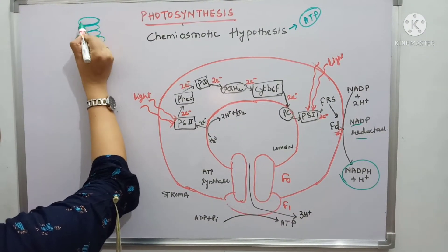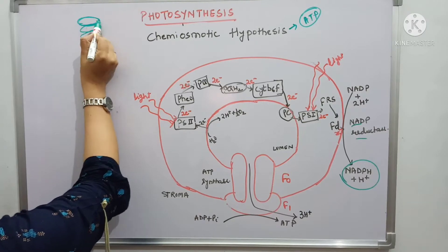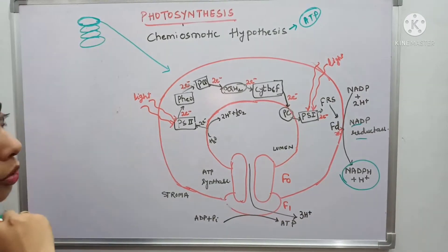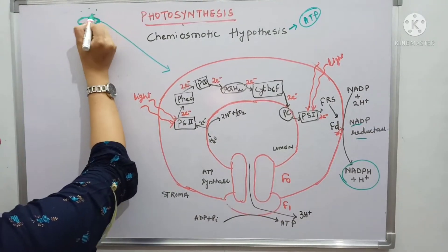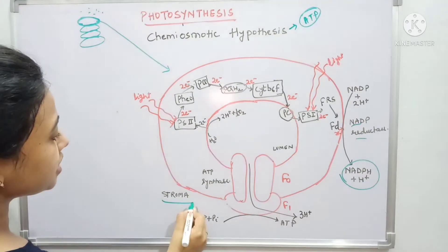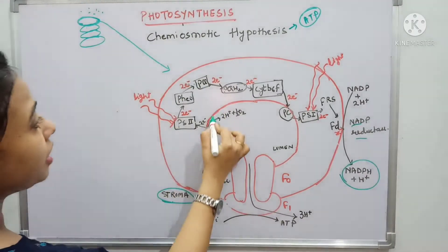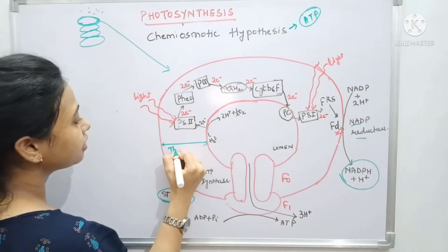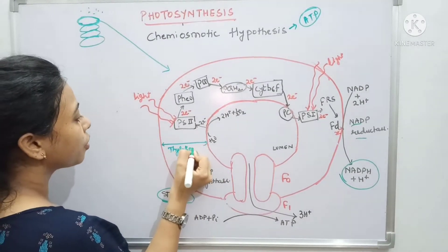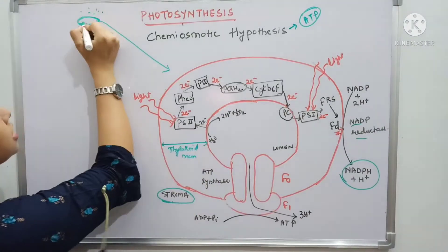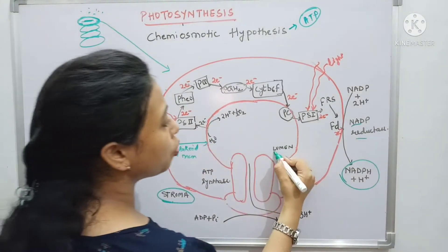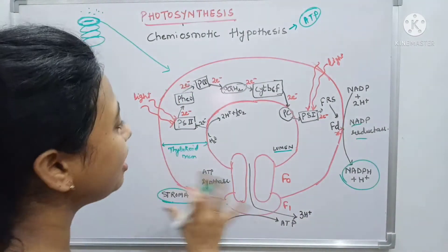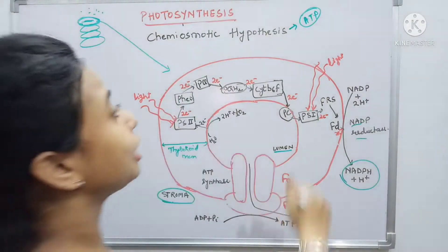I have taken one enlarged part of the thylakoid to explain. This is the thylakoid membrane. Outside of it is the stroma. This portion here is the thylakoid membrane, and the inner portion is the lumen. So this is how I am explaining the thylakoid membrane structure.